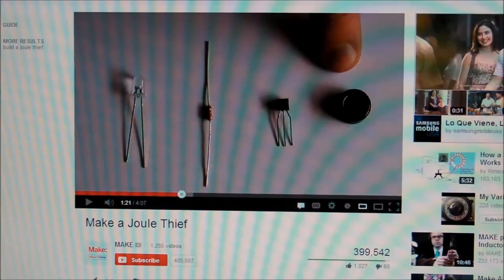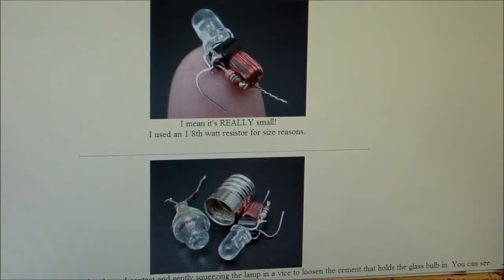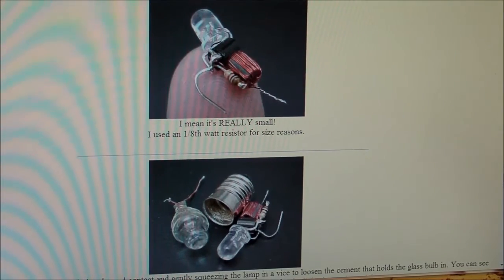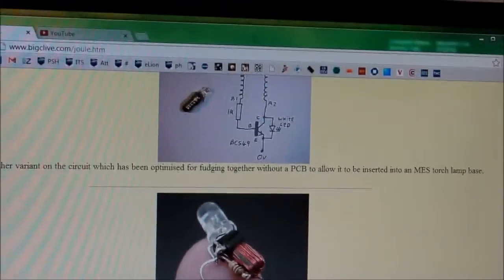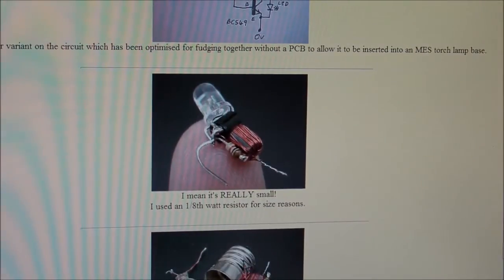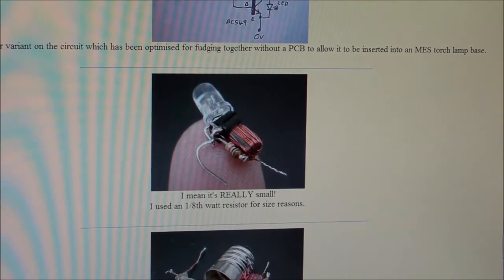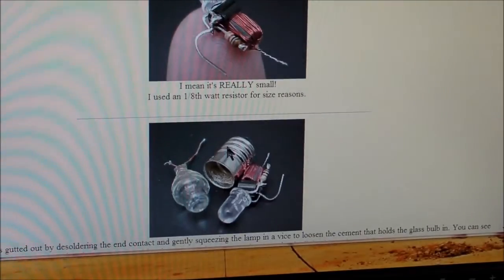Oh, and also one other really tiny jewel thief I should point out is the one that Big Clive made many years ago. This is another one of the early jewel thief websites. He made one that fit into a very tiny light bulb socket.